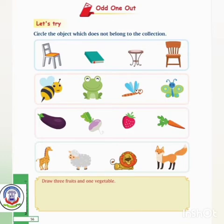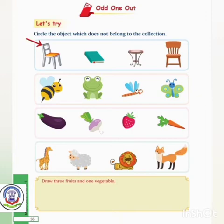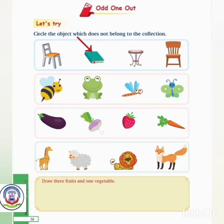Now we will do this exercise in the book. Circle the object which does not belong to the collection. Observe this picture carefully and see which does not belong to the collection. The first object is a chair, the third is a table, and the fourth is again a chair. The book is different from all of these, so we will put a circle over it.